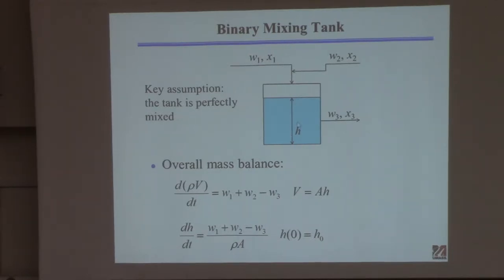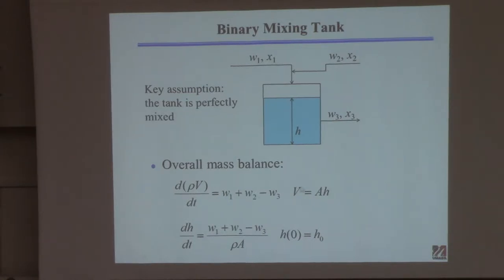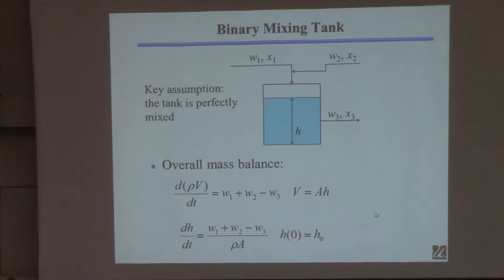Everyone can write the steady-state version where this derivative equals zero. But for the dynamic version — accounting for accumulation — you have to include what's accumulating. V is the volume of fluid in this tank; it's A times H, where A is the cross-sectional area of the cylindrical tank and H is the liquid level. Multiply that times the density and that's mass; take the derivative and that's mass per time. Assuming constant density and cross-sectional area, you substitute A times H, pull out rho*A, divide through, and you get the differential equation describing how the level changes with time.